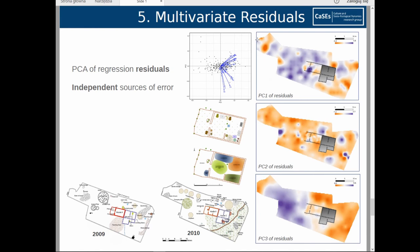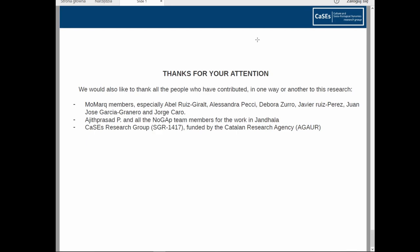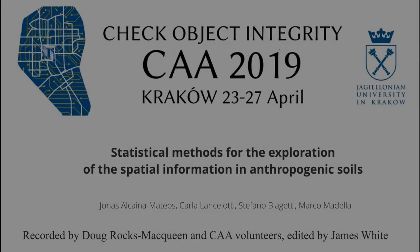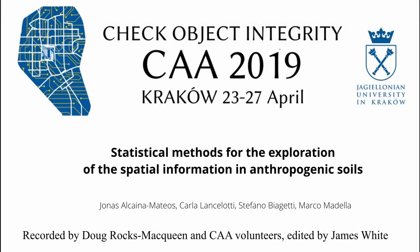As we can see, the first and second principal components of the residuals seem to be quite related to labeling errors or mixed use of the space. But the first component is more related to larger-scale effects that can be linked with different pedological processes taking place because of the human management of the space. And that is all — thank you very much.